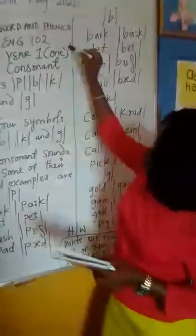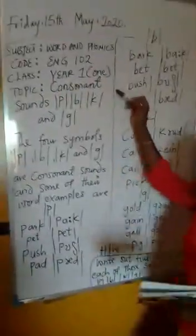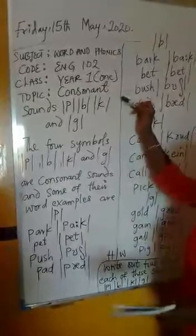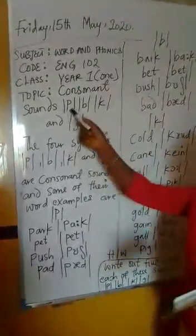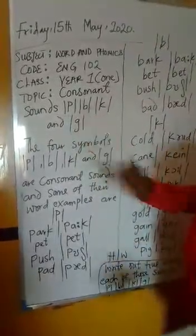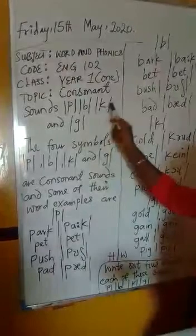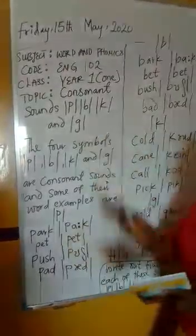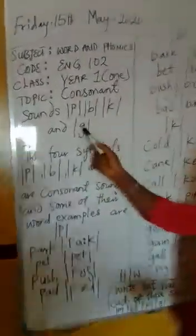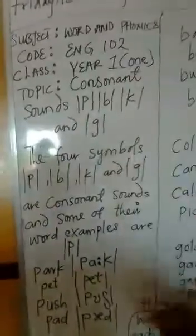Today, I'll be taking Year 1, Wild and Funnies. And the topic of today is consonant sounds P, B, K, and G. P, B, K, and G.